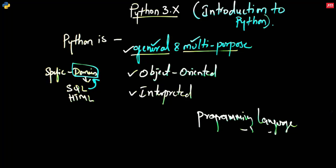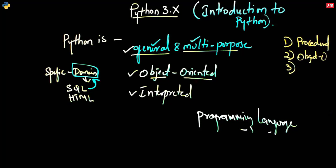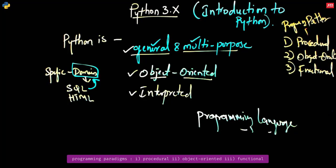Now let's talk about the next keyword: object-oriented programming language. To understand this, first let's understand programming patterns. There are three different types of programming patterns in the programming world: procedural, object-oriented, and functional. Most programming languages support one of these patterns — we call them programming patterns or paradigms. Python actually supports almost all these types of patterns, and is majorly based on object-oriented.